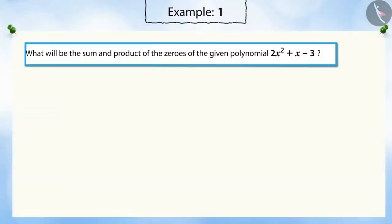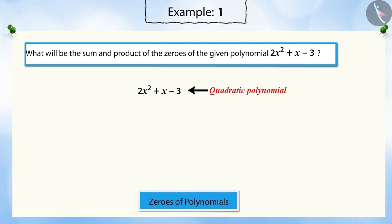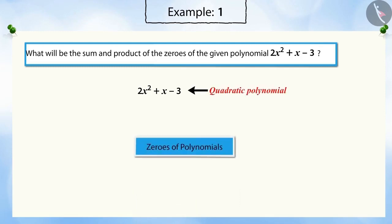What will be the sum and product of zeros of the given polynomial 2x² + x - 3? Can you say how many zeros this polynomial has? Correct answer, because it is a quadratic polynomial, it can have at most two zeros.